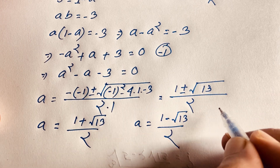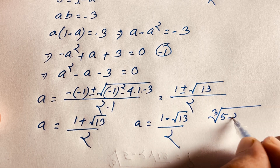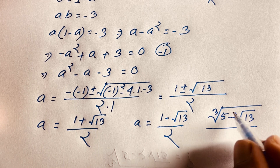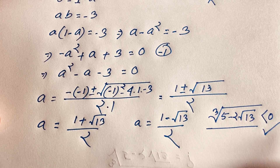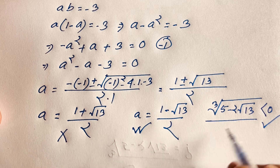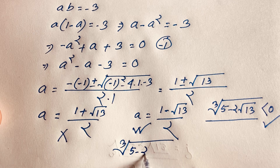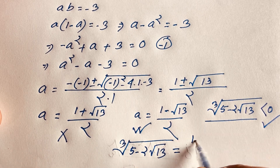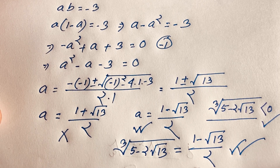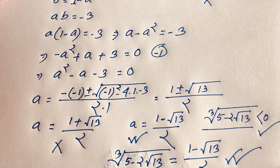We have two values, but recall our original question: cube root of (5 minus 2 square root 13). Since 5 minus 2√13 is less than zero, a must be negative, so we take the minus sign. The final answer is a equals (1 minus square root 13) over 2. Thank you all — if you enjoyed this video please subscribe for more interesting videos. Goodbye, take care.